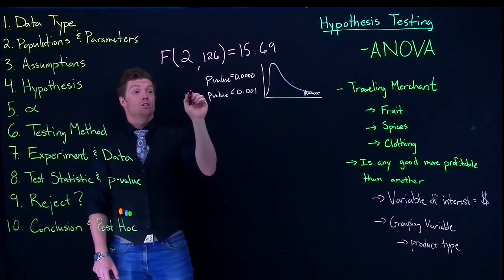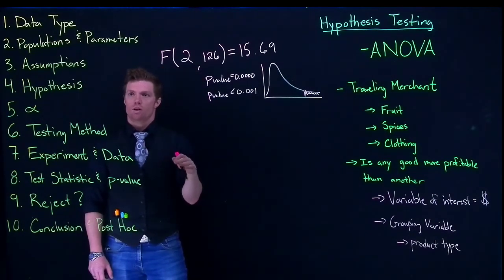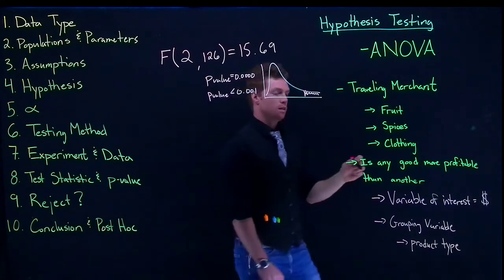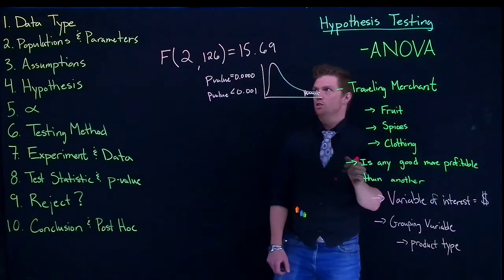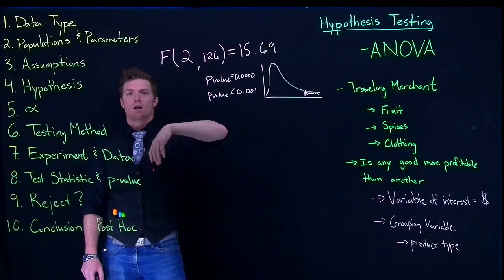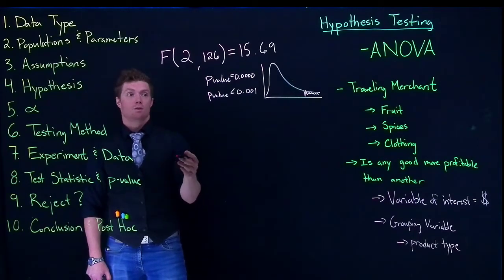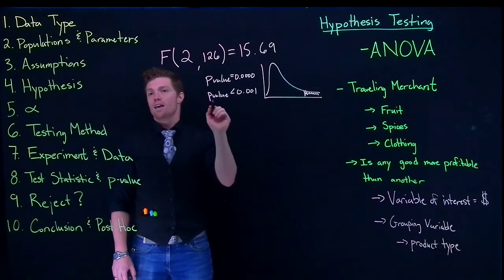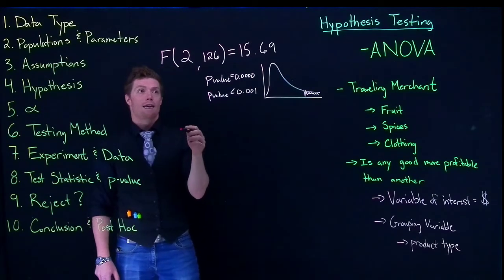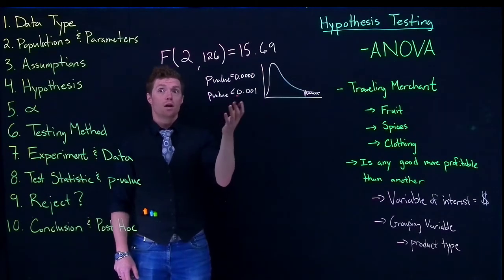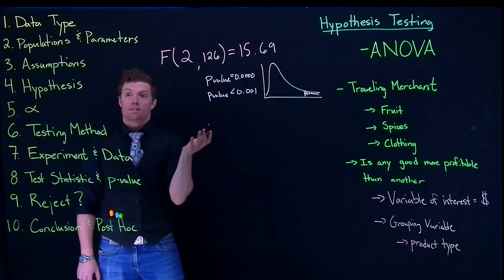And how we interpret our p-value is the same as we've always done. It's like assuming that the null hypothesis is true. Now remember our null hypothesis was that all of the means were equal to one another. So if we make that assumption what the p-value says is this is the likelihood that we would see a result this weird or weirder if the null hypothesis is actually true.